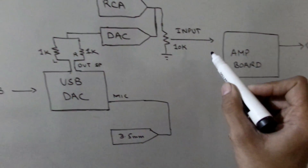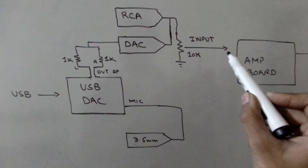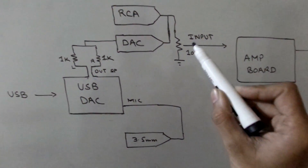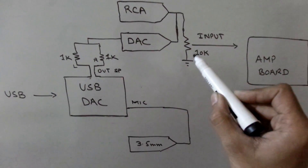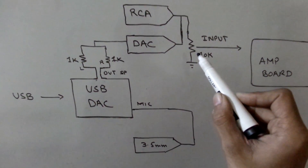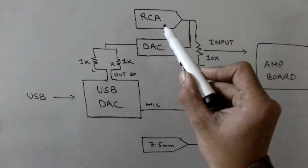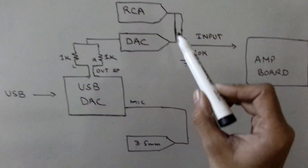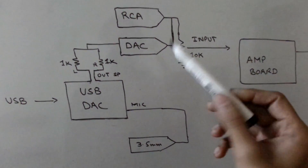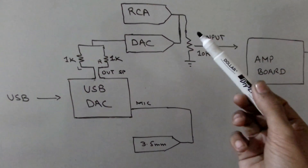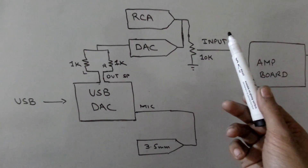The input of this amplifier is coming out of the wiper of the 10K potentiometer. This potentiometer is then connected to the RCA connector and DAC. What DAC is — is digital-to-analog converter, and it is our USB audio codec.